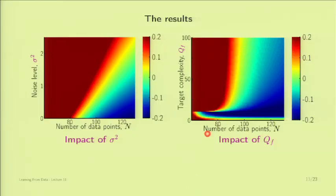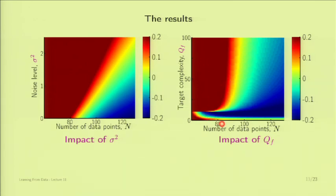Now let's look at the impact of Q_F, because that was the mysterious part—we got overfitting without noise. For the second plot, we fix sigma squared at 0.1 and increase target complexity from trivial up to 100th-order polynomial, plotting the same range of N from 80 to 120. You can see that overfitting occurs significantly and worsens with target complexity. At any fixed N, going from low to high Q_F takes you from green to red to dark red. The main observation is that the red region is serious—overfitting is real and here to stay.